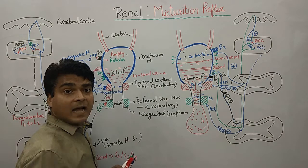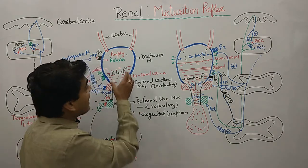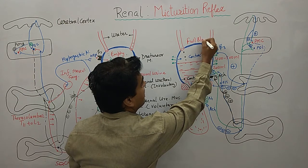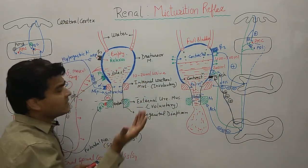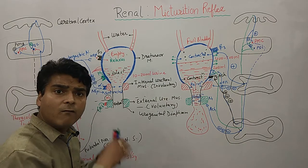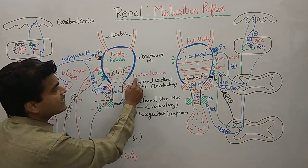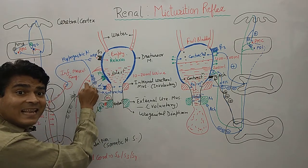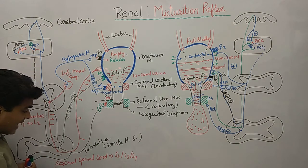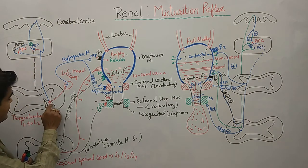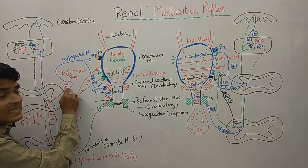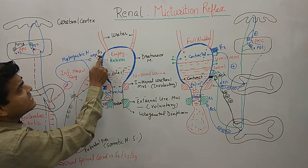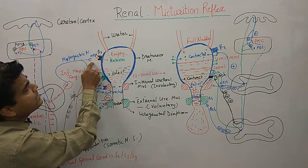To summarize: at the time of empty bladder — only 10 to 20 ml — there is less stretch, less activation of the sympathetic area. The sacral spinal cord sends impulses to the thoracolumbar region, which make synapse with the inferior mesenteric ganglion. The inferior mesenteric ganglion connects with the hypogastric nerves and releases norepinephrine. Due to inhibition, beta-3 receptors cause relaxation, and alpha-1 receptors are activated causing contraction of internal urethral muscles.